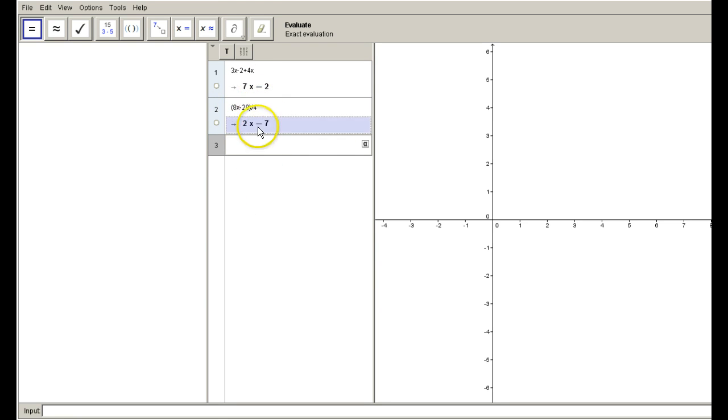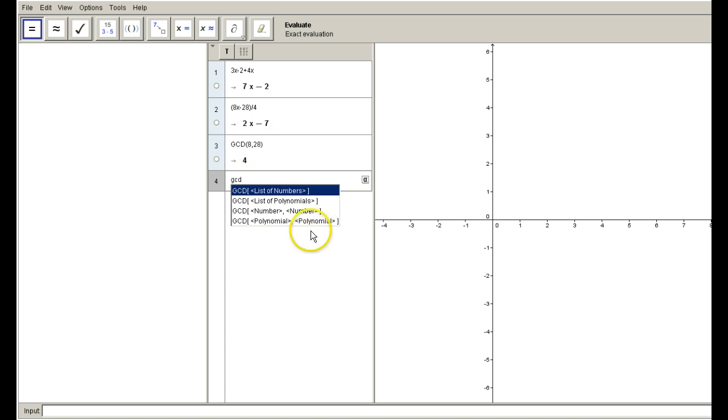I don't know if I can find the greatest common denominator. Let's try that. Greatest common denominator of 8 and 28. I'm pretty sure it's going to because did you notice as soon as I started typing it, it says, hey, look at this. You can list numbers, polynomials. You can use this format and just put it in using that format, and it will work. So that's pretty cool.